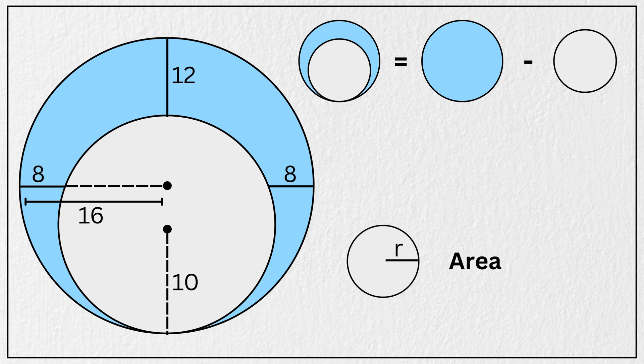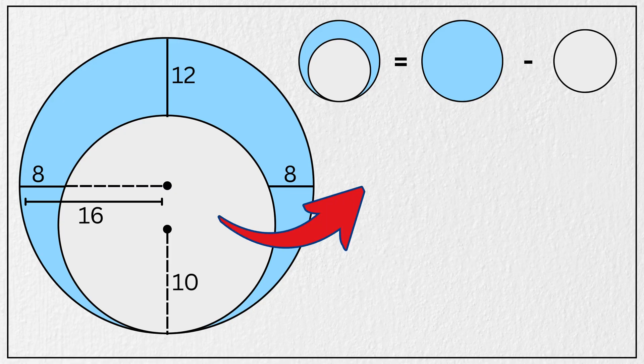And we know that the area of a circle is given by the formula pi times the radius squared. So substituting the values, we get area of blue shaded region is equal to pi times 16 squared minus pi times 10 squared.